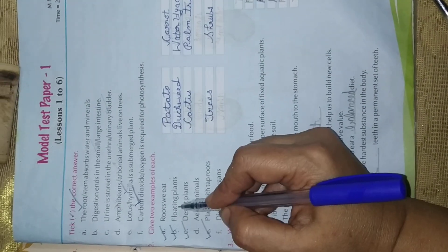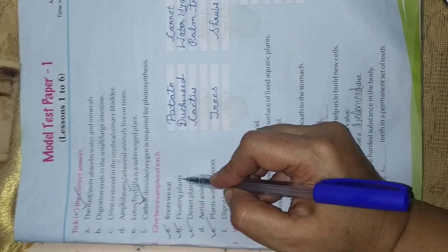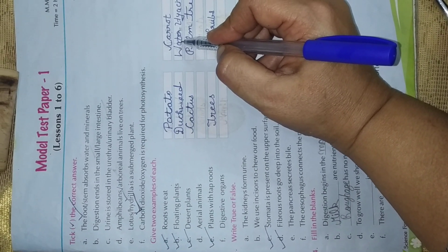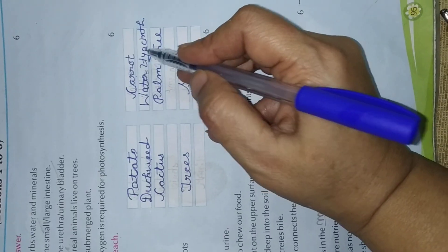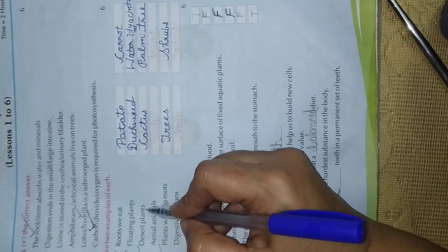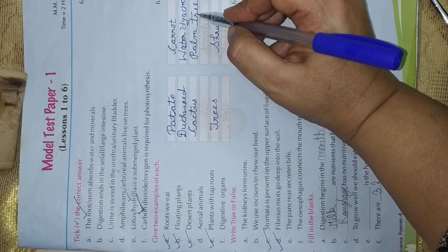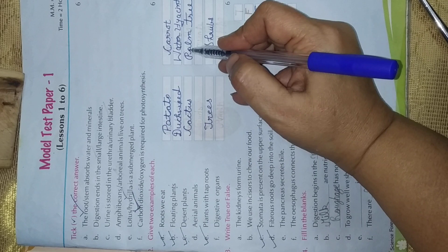B. Floating plants. You know floating plants? Duckweed and water hyacinth. Tell me 2 floating plants. Duckweed, water hyacinth. C. Desert plants. You know desert plants? Cactus, palm tree.